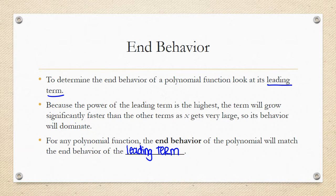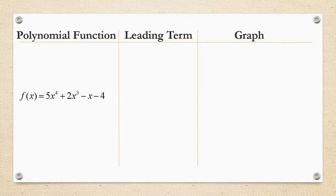Let's look at some examples. If we have this polynomial function, you can see that the leading term is 5x to the 4th. That leading term is the term with the highest exponent when we're looking at it in standard form. So 5x to the 4th — this coefficient is positive, and x to the 4th means we're dealing with an even-powered function. So with a positive coefficient and even power, it's going to look like a smiley face, like a U.